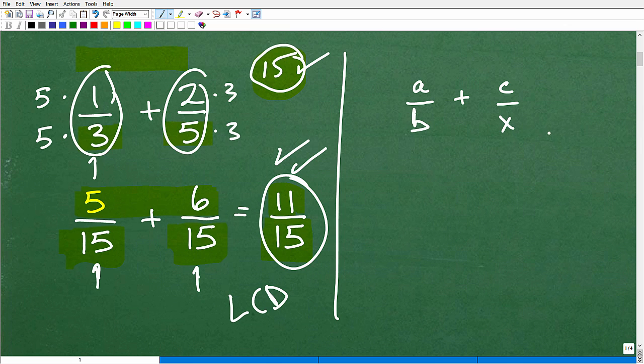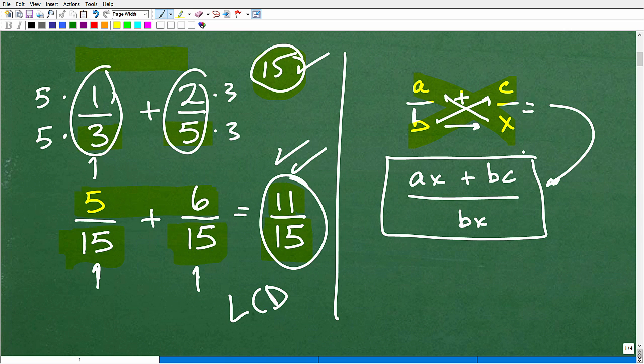What if I had A over B plus C over X? You're like, well, what's the LCD? Well, you can go through. That's BX. But if you know this technique, this works here with algebra as well. So this is X times A. So AX plus B times C. That's BC over B times X, BX. There you go. So this is equal to this. And I didn't really have to think about it. And it's absolutely an accurate answer.